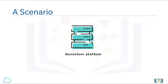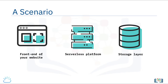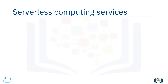Let's look at a scenario. You could, for example, have a serverless platform between the front end of your website and your storage layer running individual functions. The serverless app could be translating text files and storing them in a cloud-based storage service. Using the front end of your website, you send text files to a serverless app. The app creates translations in different languages, then stores these translated files in cloud storage and sends their links back to you.